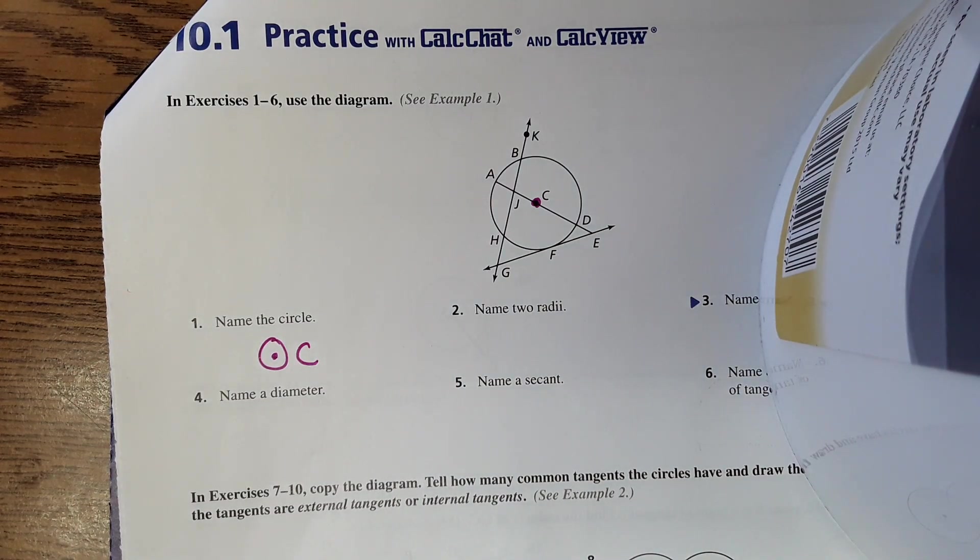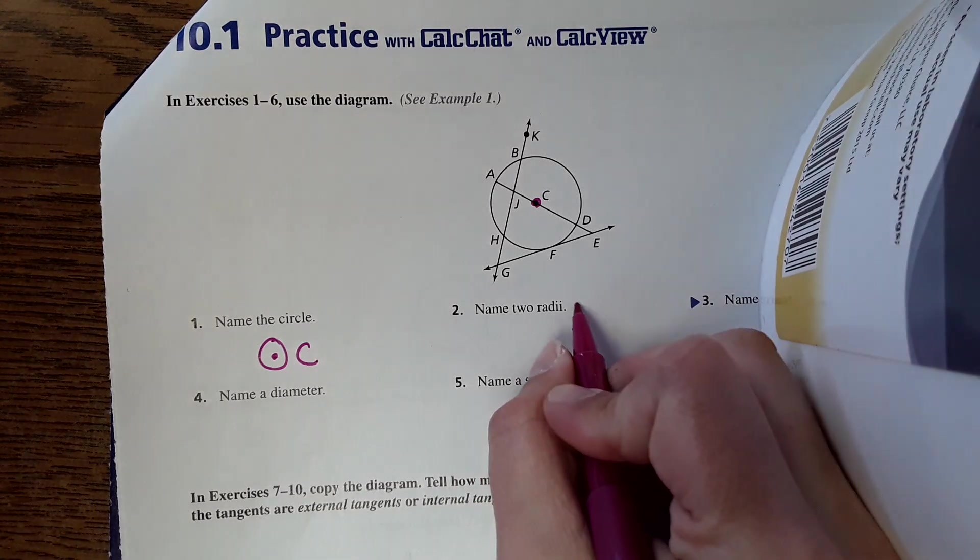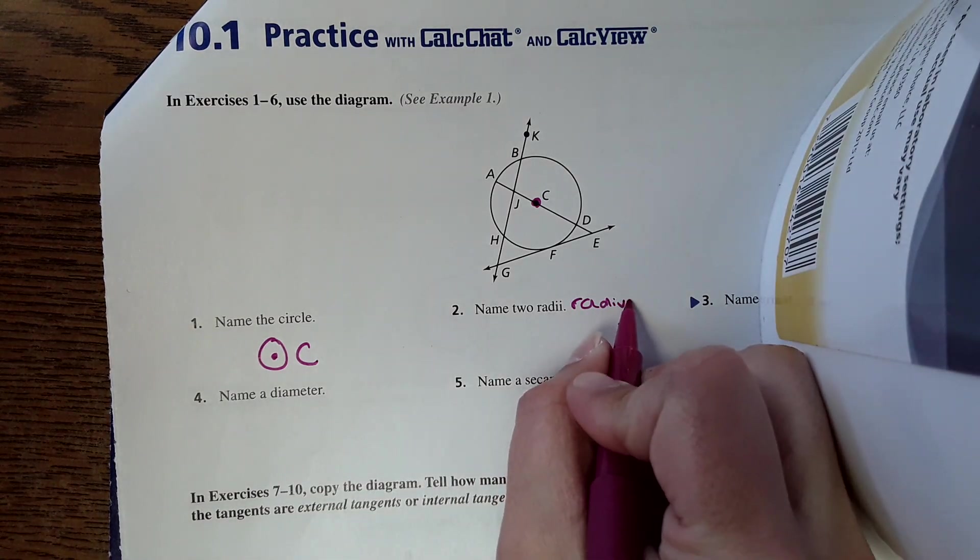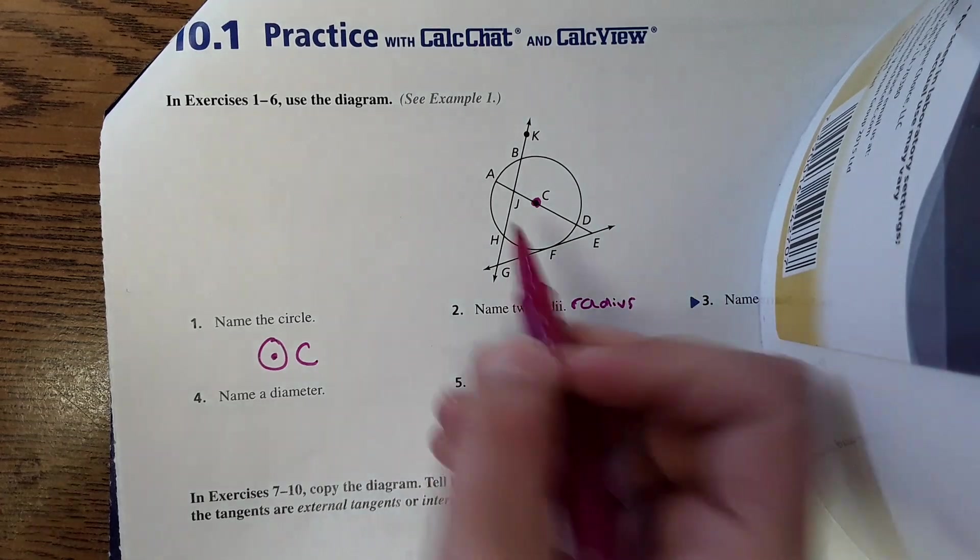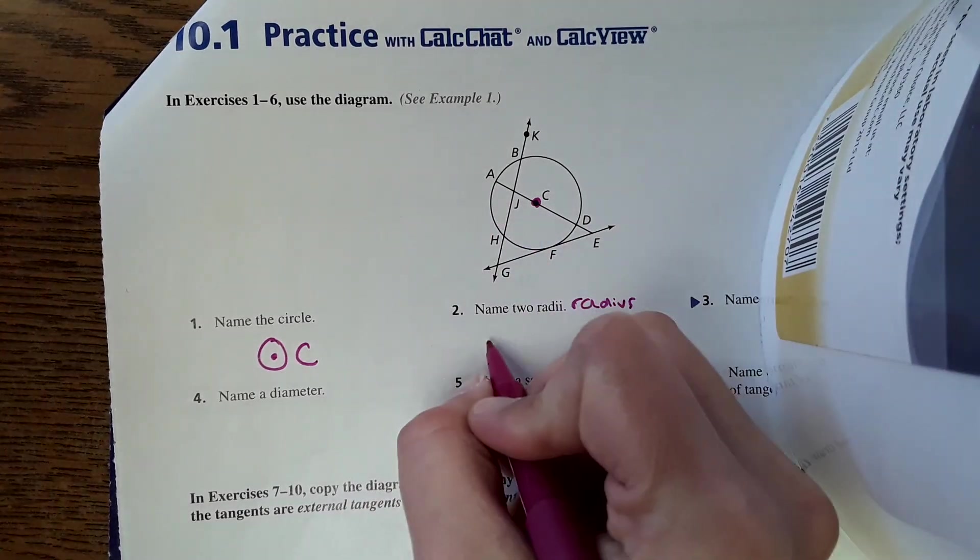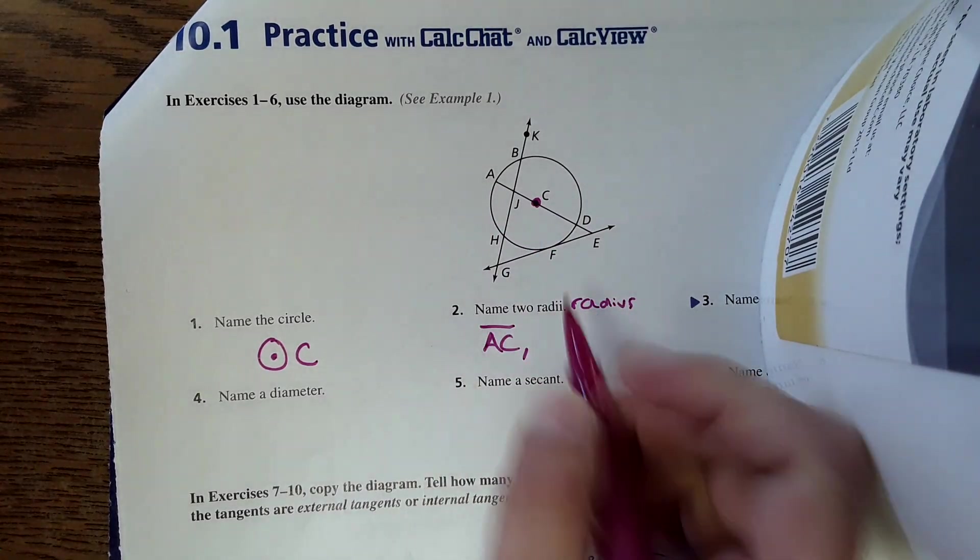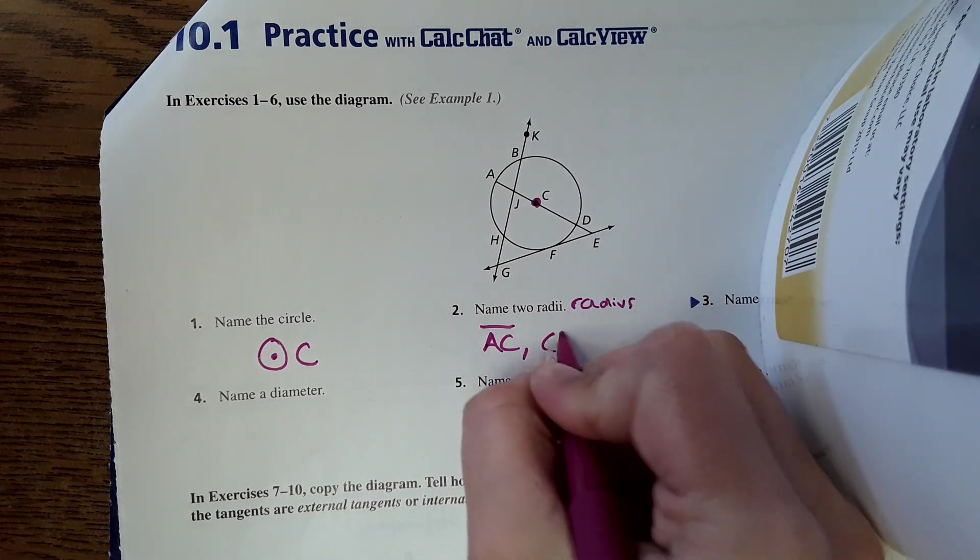Then it says name two radii. Radii is the plural form of radius. Radius is halfway across the circle. So segment AC is a radius, and segment CD is also a radius.